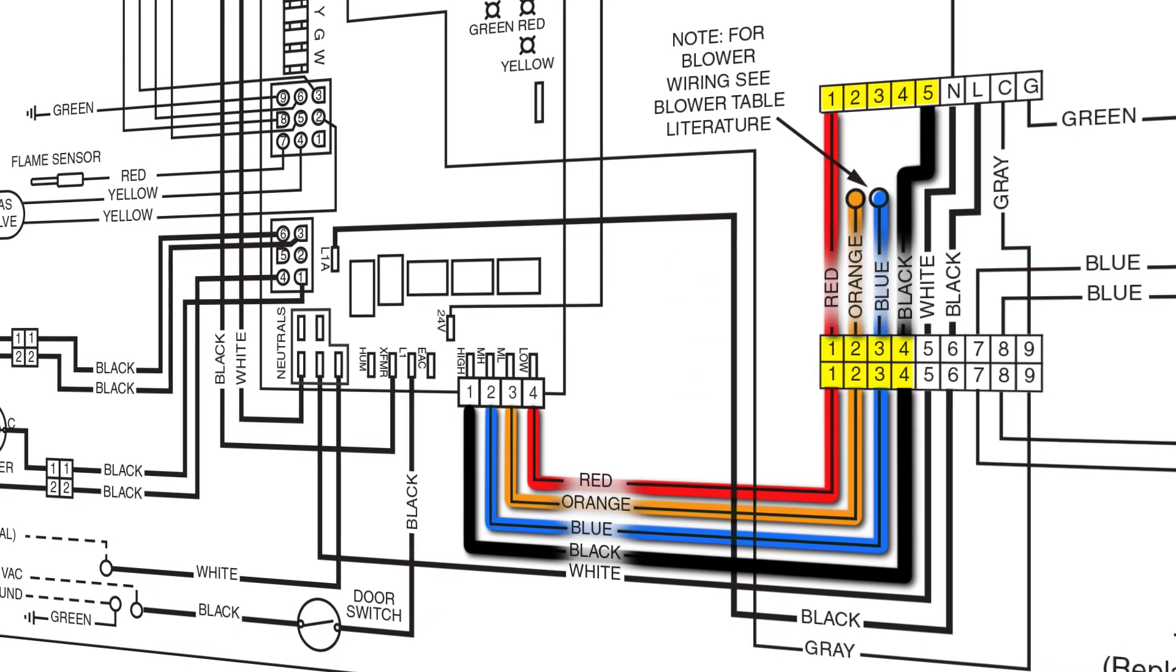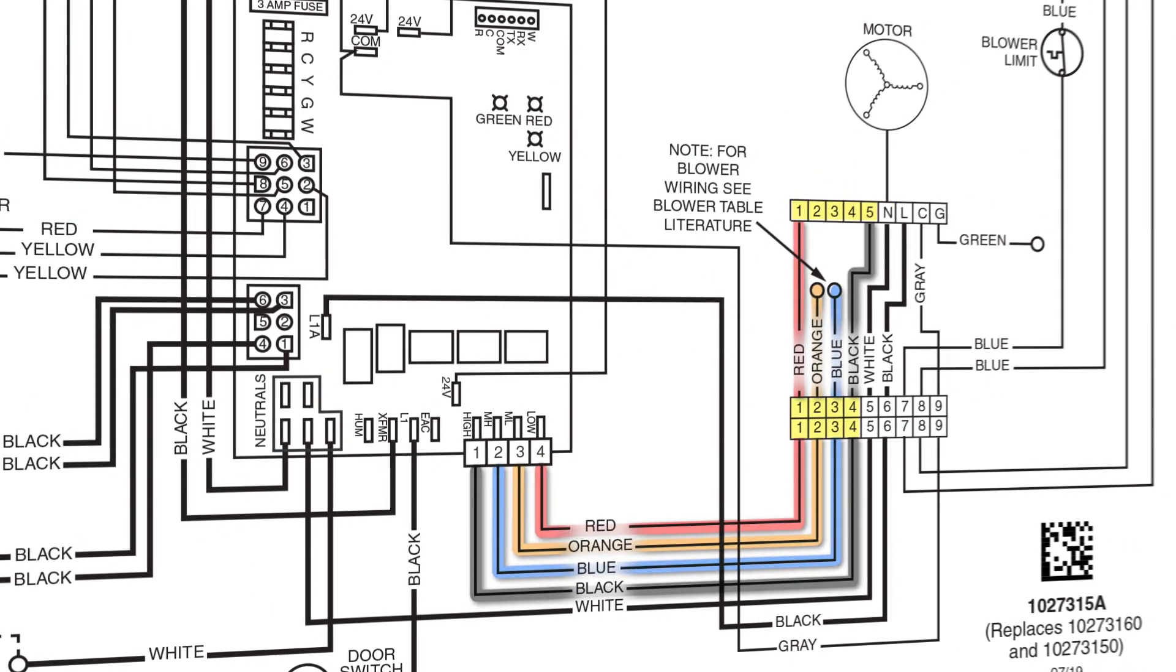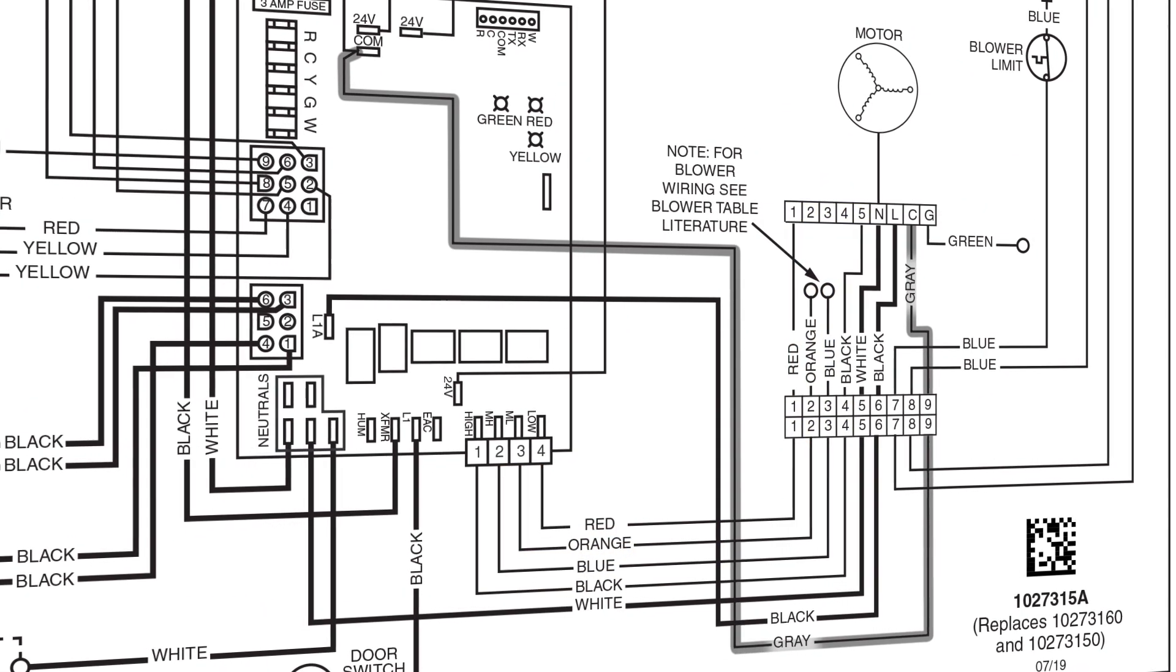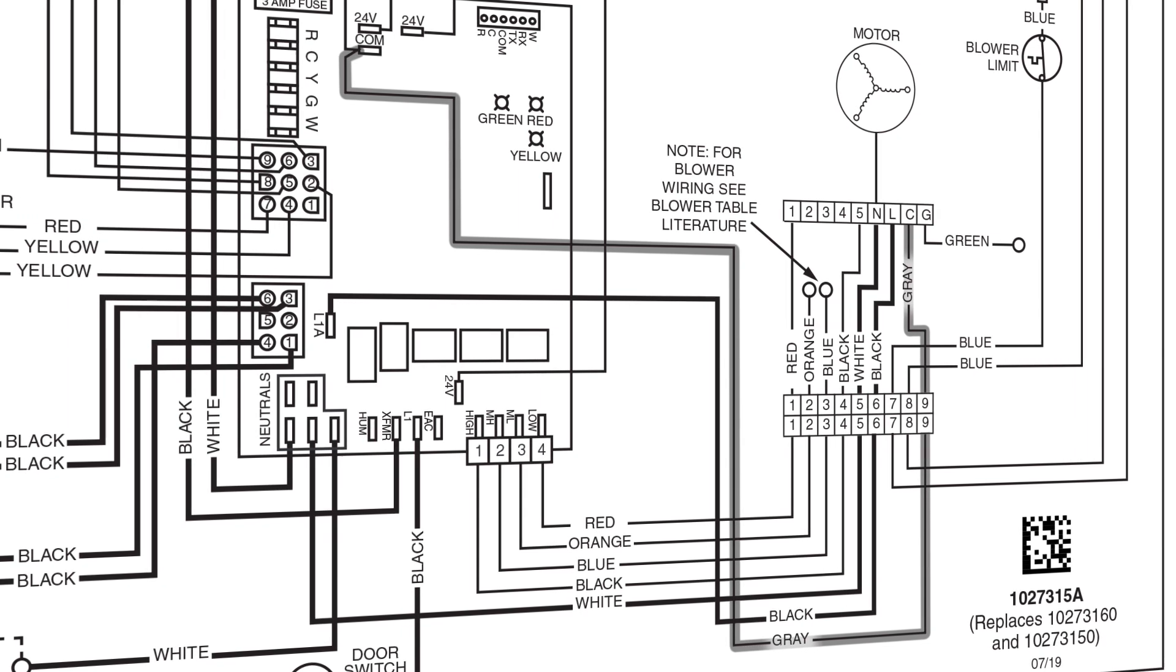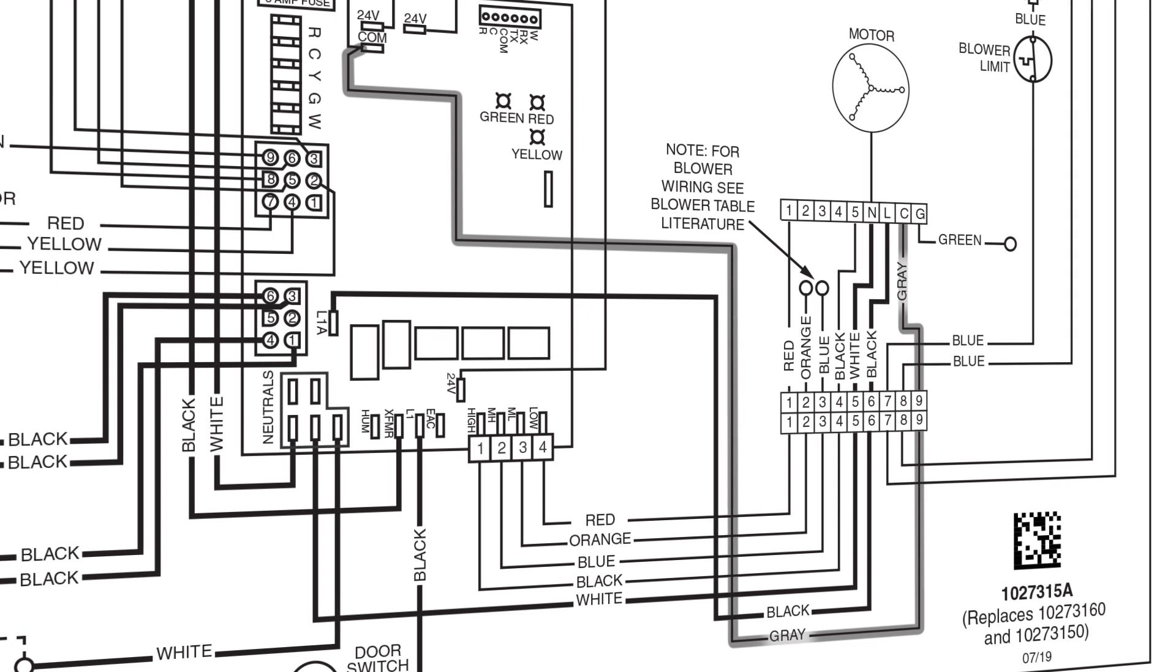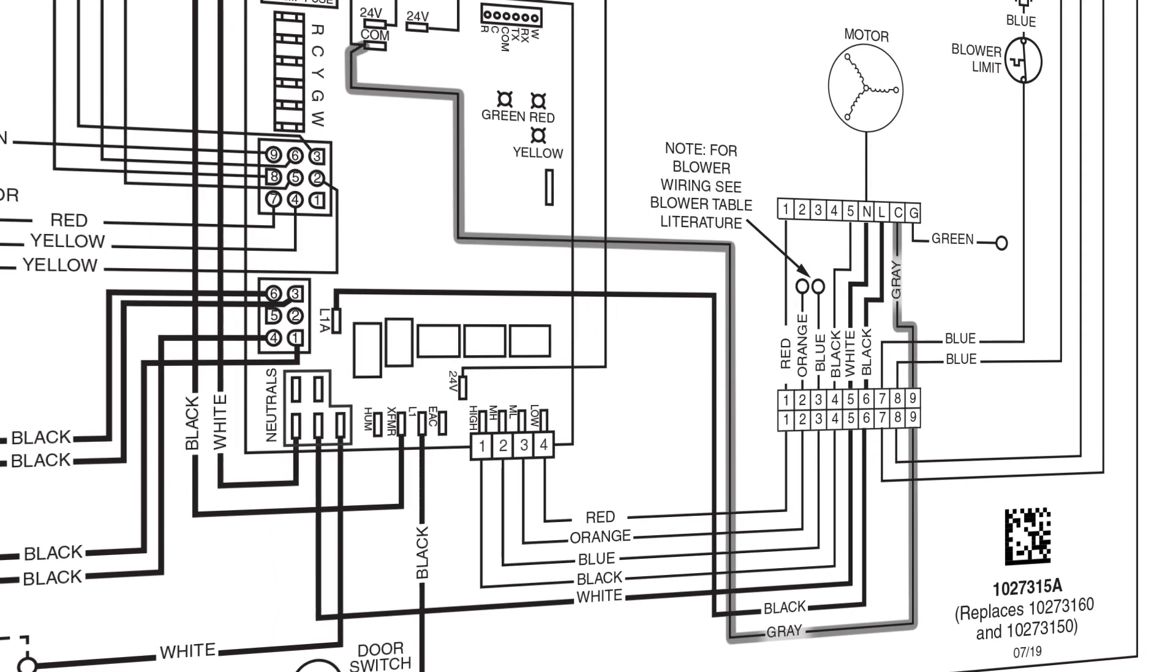Also what we'll have is a gray wire that will be a 24 volt common, which we need that in order to get 24 volts to the motor. So again, you'll have line voltage and you'll also have 24 volt VAC voltage going to the motor.